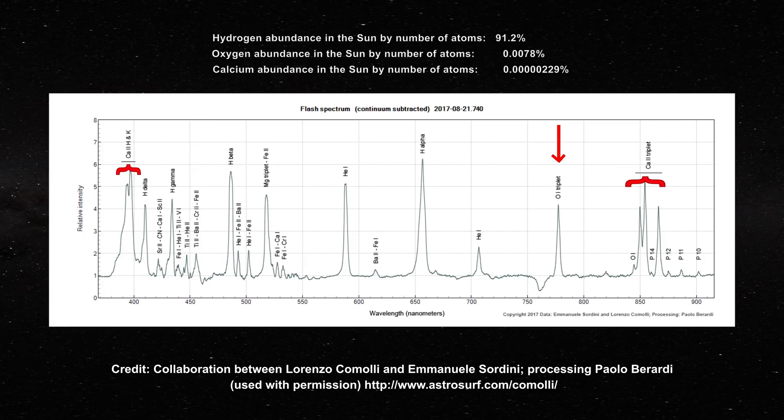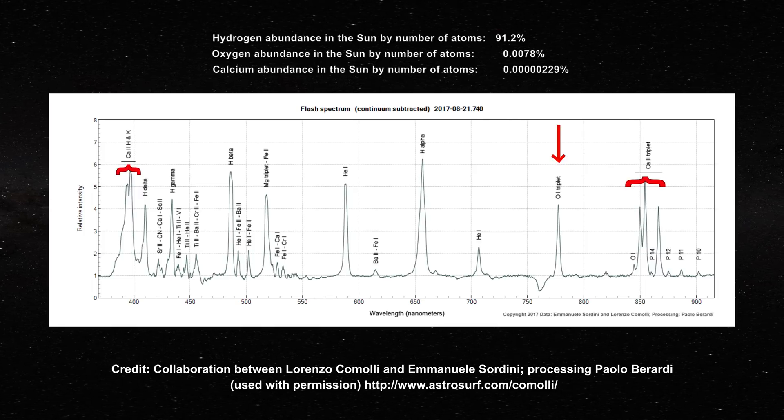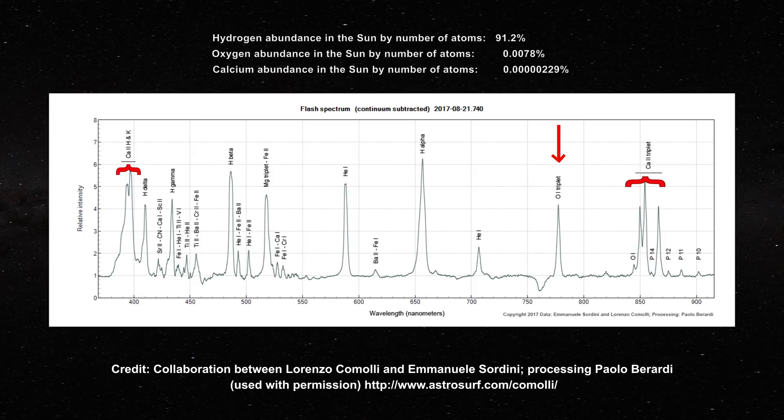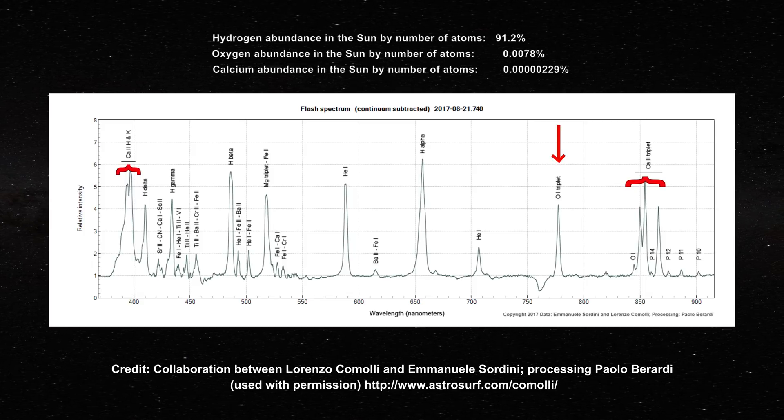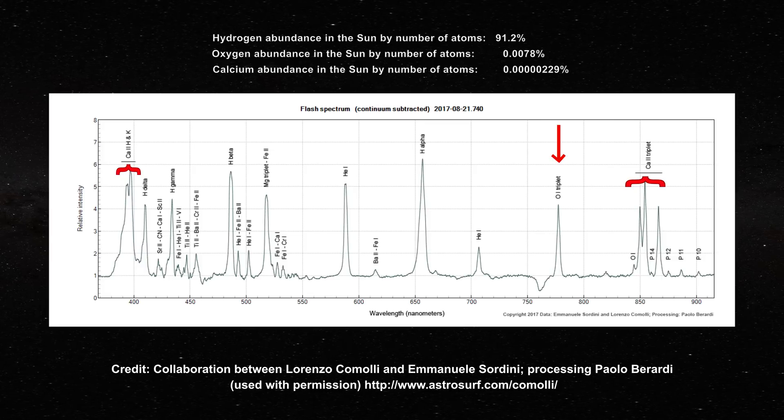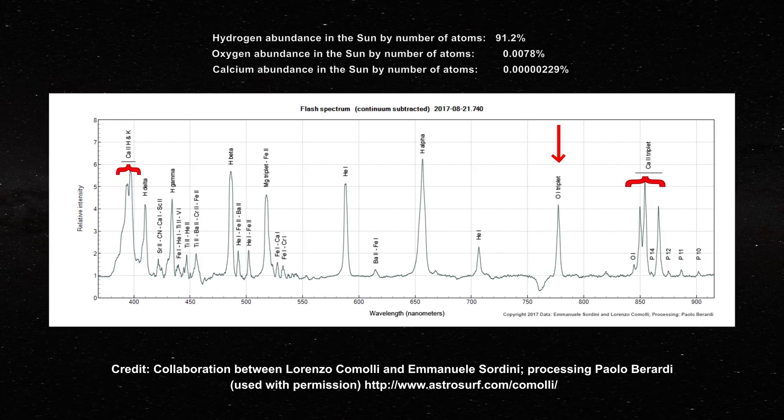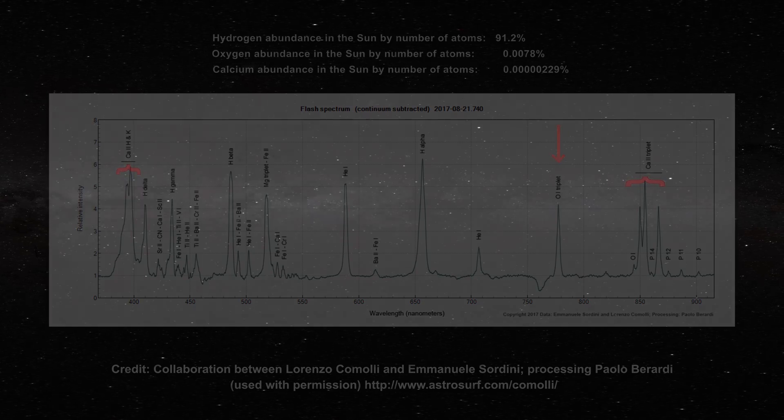Are those lines ever strong when you consider that calcium is estimated to be less than one-hundredth of one percent of the number of hydrogen atoms. Something is clearly enhancing the calcium lines and all the others relative to hydrogen. This phenomenon cannot be random. It is unlikely to be due to inherent line strengths. This strongly suggests that chemistry is going on here.